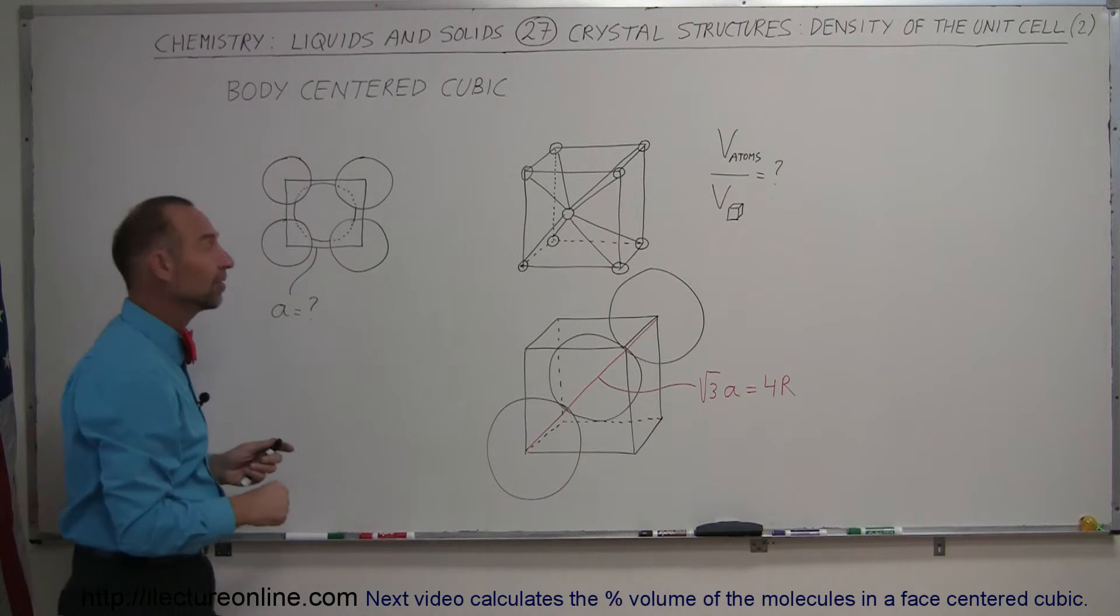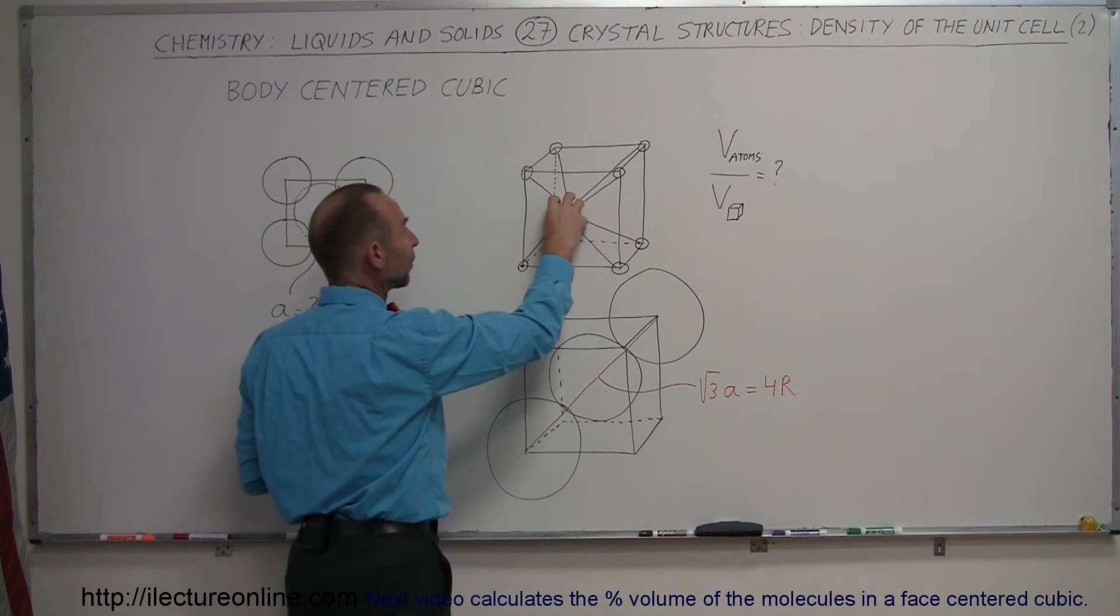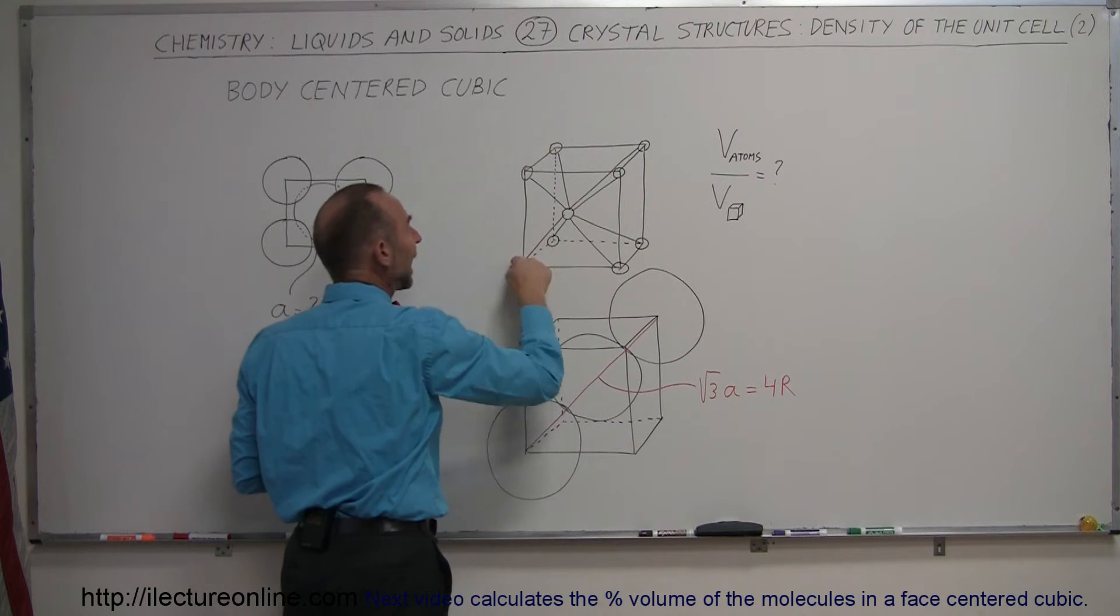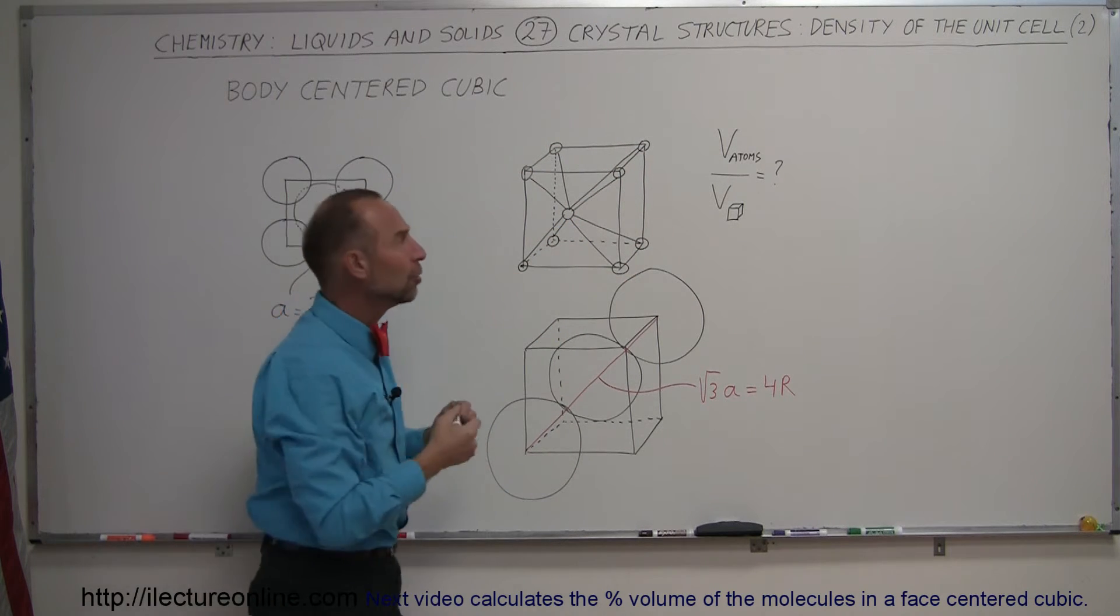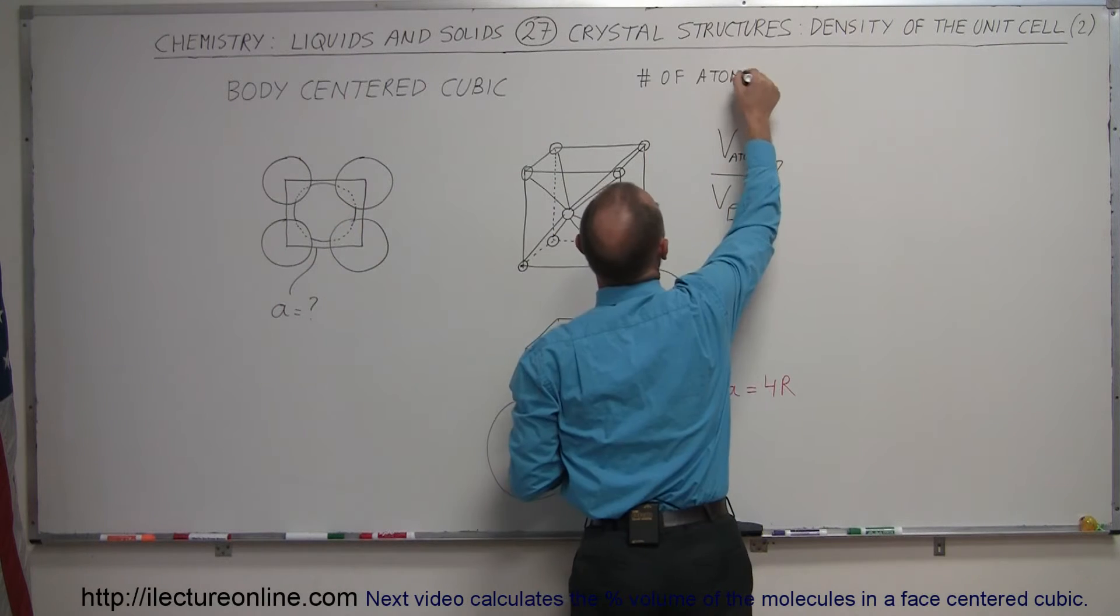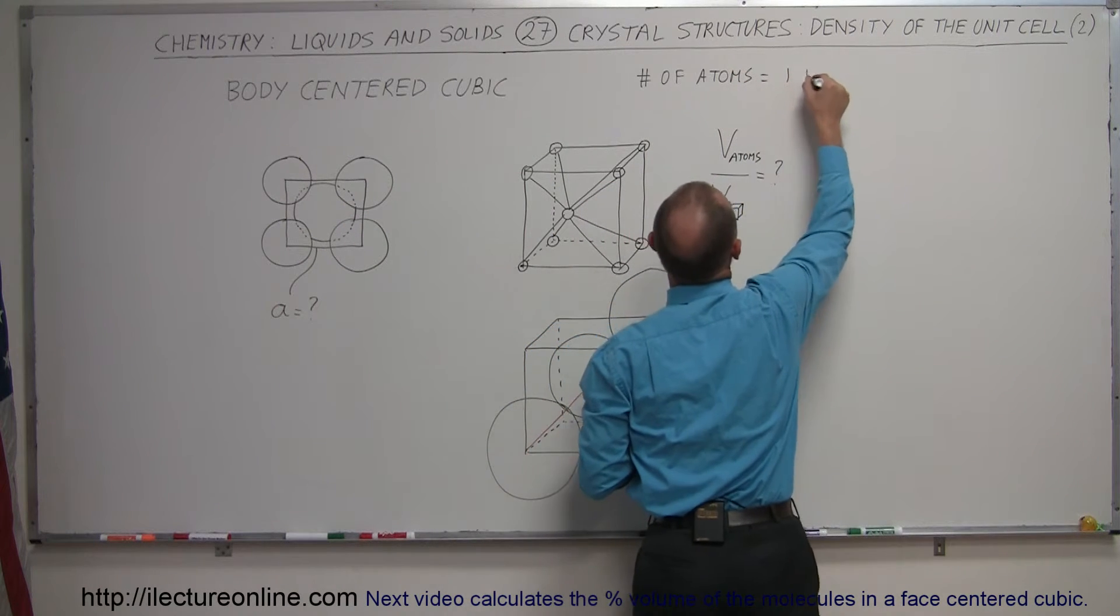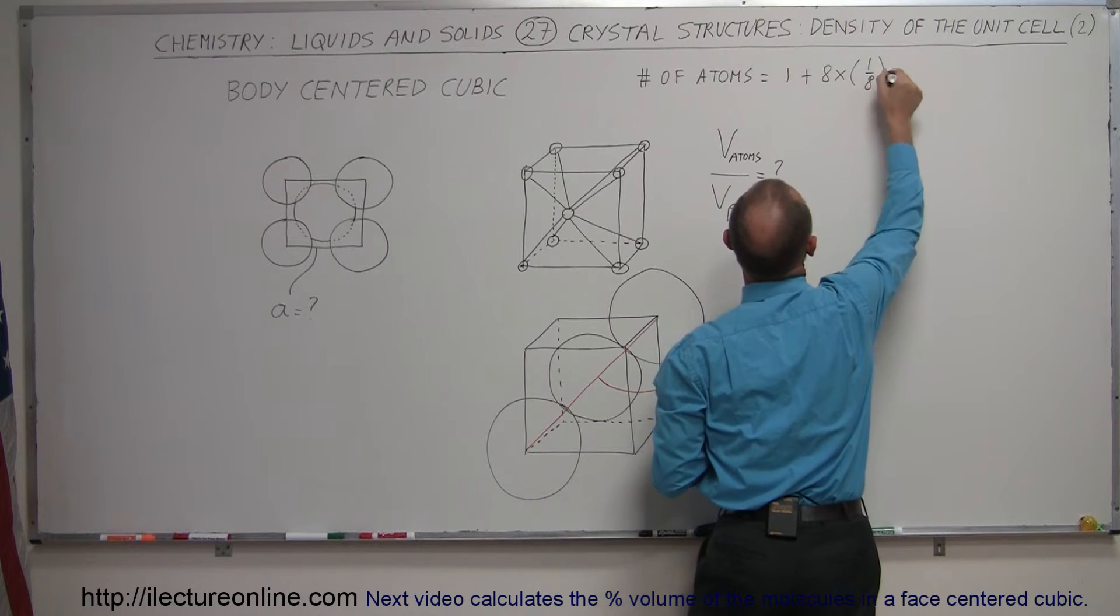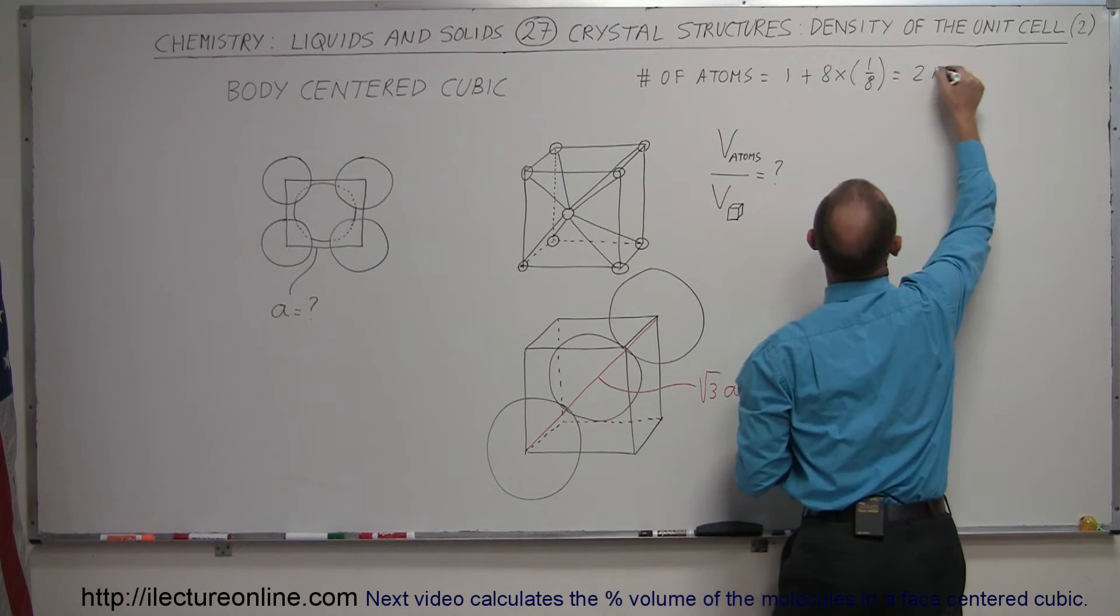First of all, what are the number of atoms inside? We'll definitely have a complete atom right here, and we still will have one-eighth of each of the eight atoms at each corner. So the number of atoms will be equal to one plus eight times one-eighth of an atom, which is a total of two atoms.